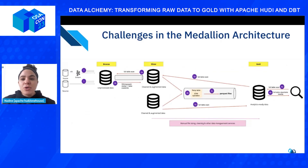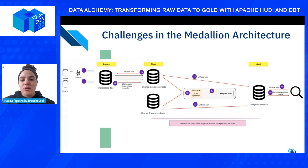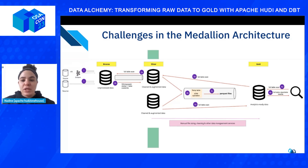When people approach the medallion architecture, they typically approach it with a diagram like this. In the raw layer, you'll first ingest raw or unprocessed data into the data lake and create what we call the raw or bronze layer — I'll use those interchangeably throughout the presentation. Then you do a full table scan to grab all the data, including new updates, and rewrite the entire table with augmented data.